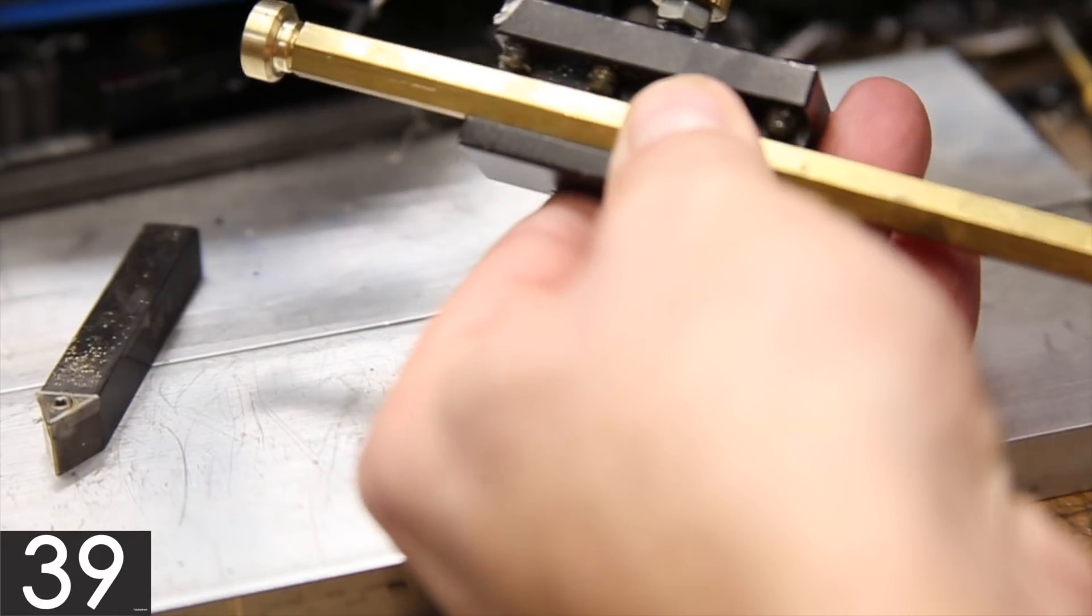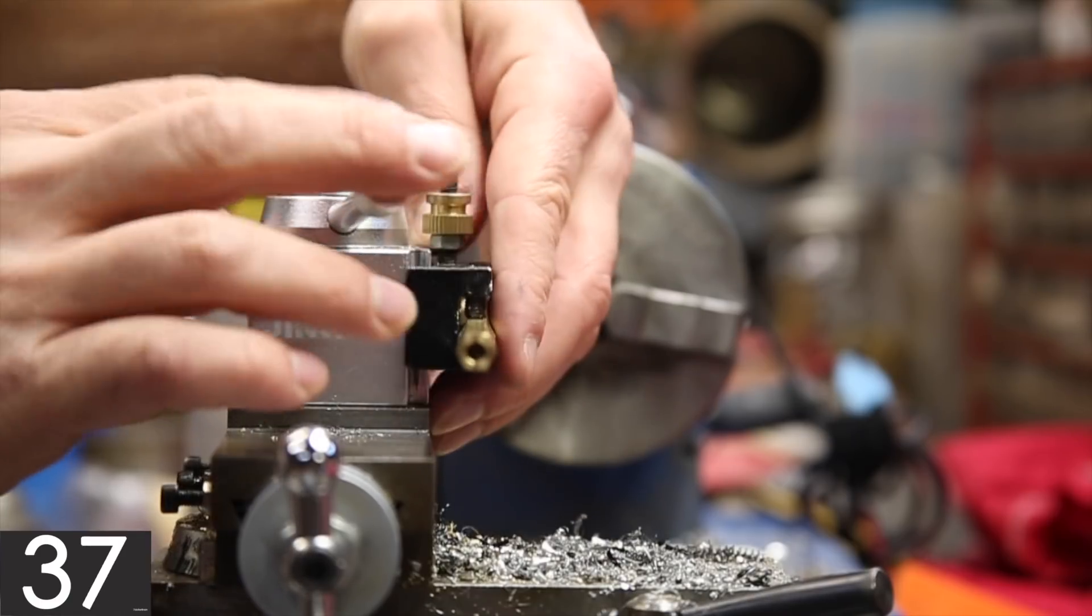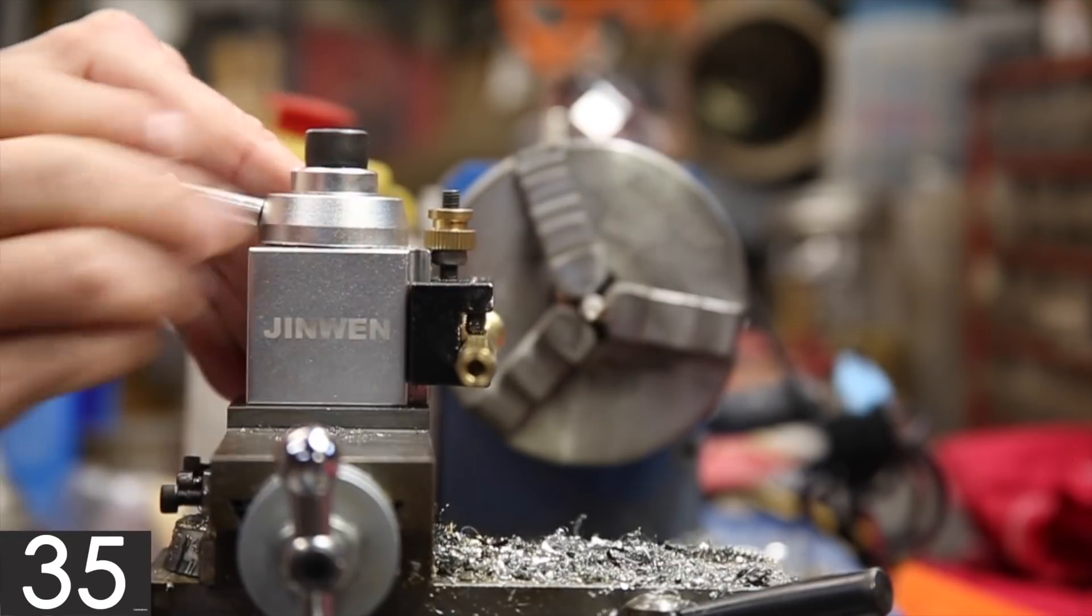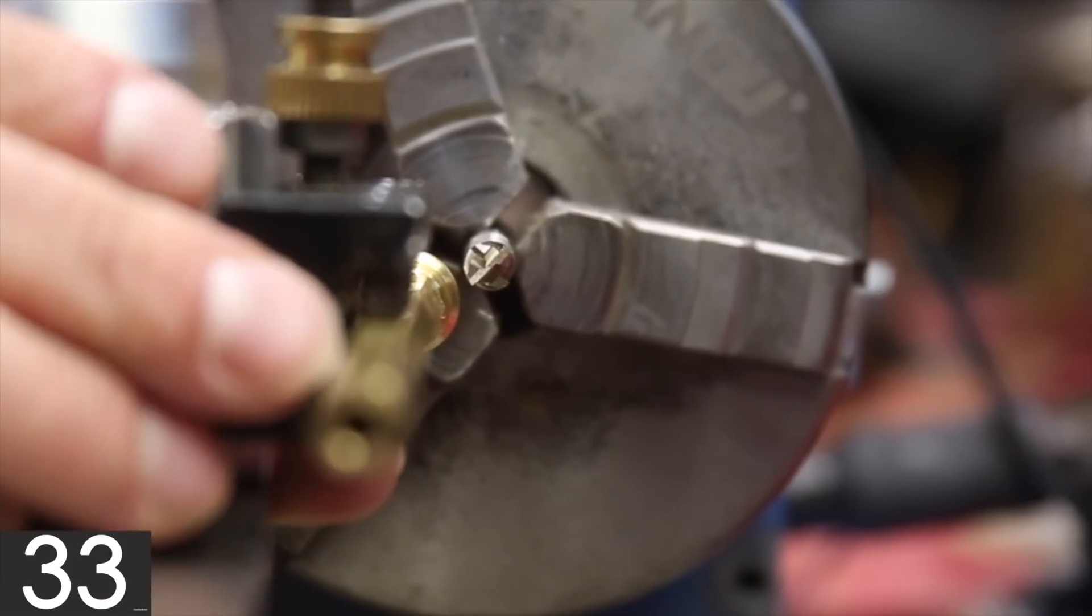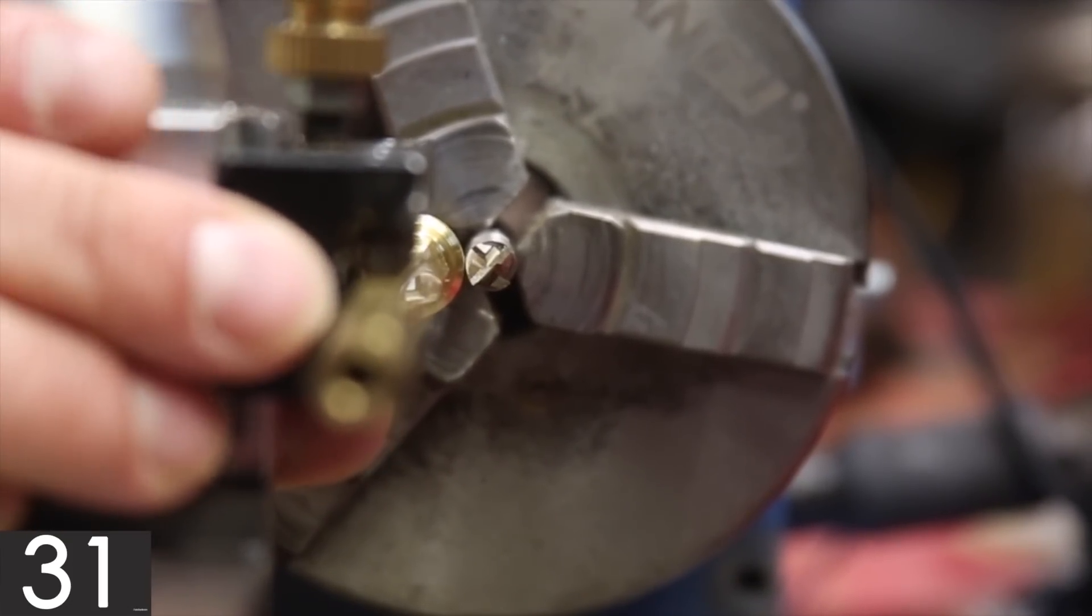The jig can then be mounted in one of the quick change tool holders, attached to the quick change tool post, and then the height adjusted accordingly. In this example I'm using an end mill bit mounted in the chuck.